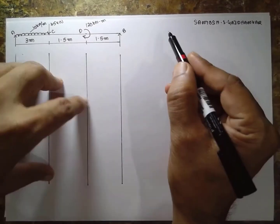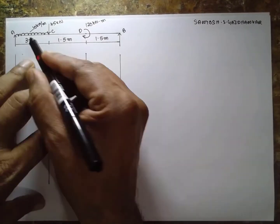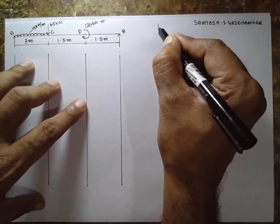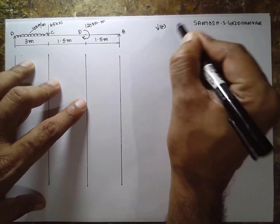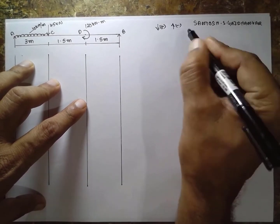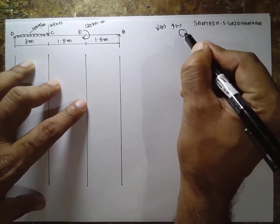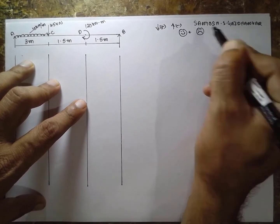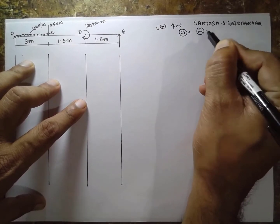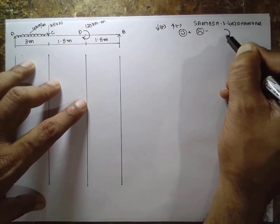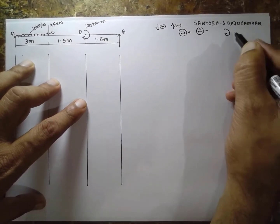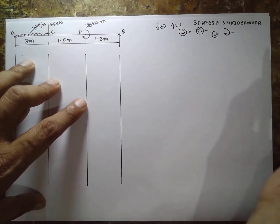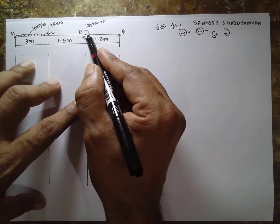Today I am teaching you a simply supported beam with UDL and a couple. The sign convention: a downward arrow is considered positive and an upward arrow is considered negative. For sagging, it is positive; for hogging, it is negative. For a clockwise moment, it is negative; for an anticlockwise moment, it is positive. There is a couple acting on the beam.